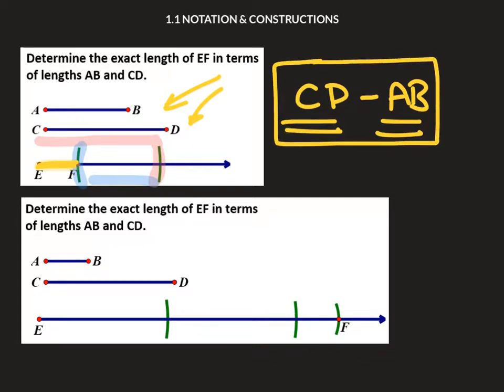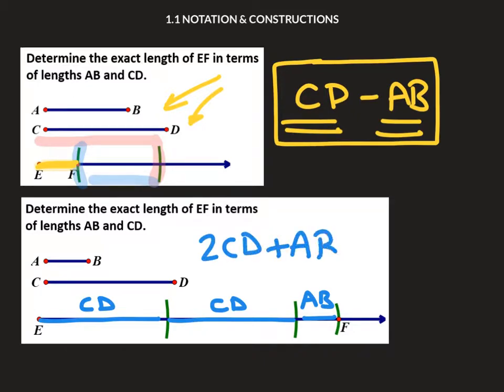In the next case, it looks like I've done a CD here, and I've done another CD here. And then that last one looks like an AB. So if I was naming this, it's two CDs and an AB would be the description for that particular one.